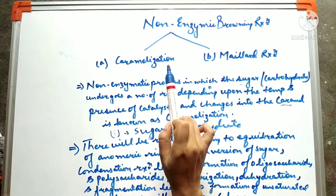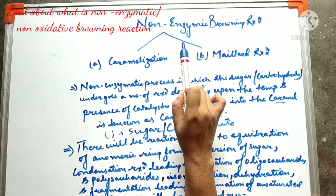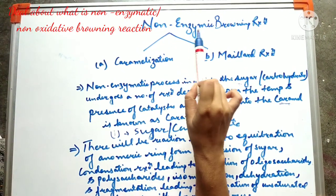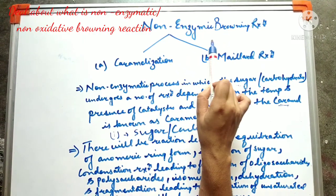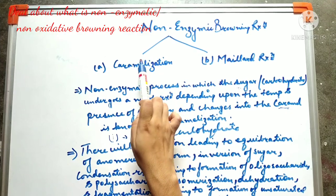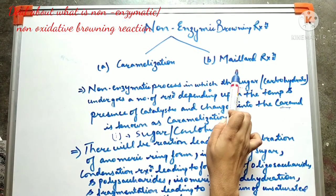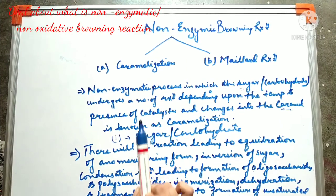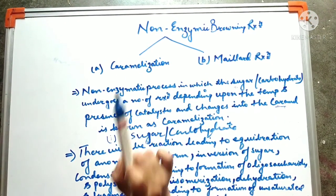In this video, I will particularly deal about what is the non-enzymatic browning reaction. The non-enzymatic browning reaction is also known as the non-oxidative browning reaction, and it is further categorized into two: caramelization and the Maillard reaction. But in this video, I will particularly deal about what is the caramelization browning reaction.